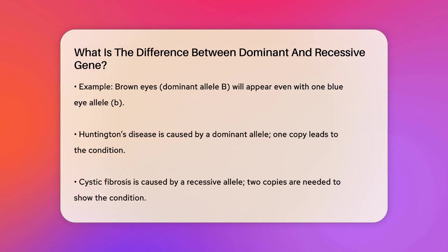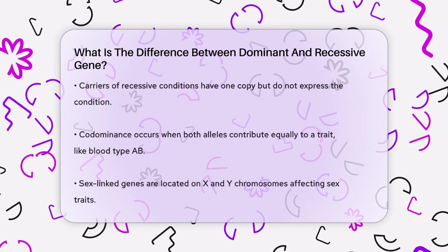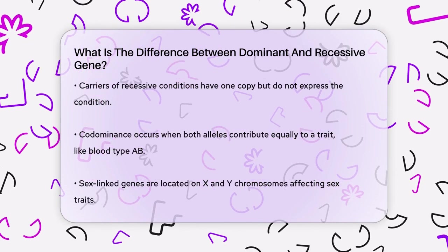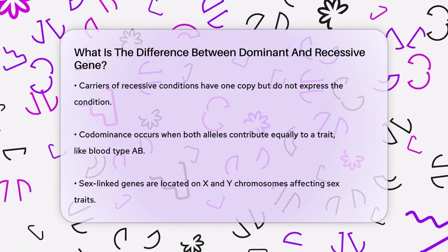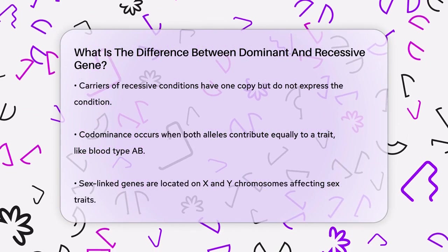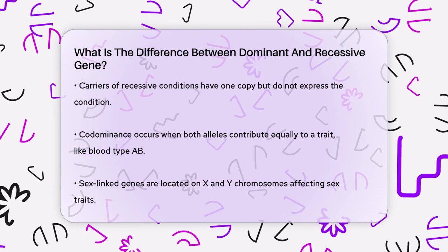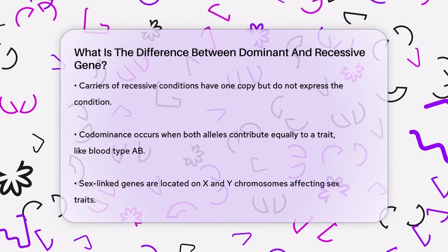Here's another example to make it clearer. Huntington's disease is caused by a dominant allele — if you inherit just one copy of this mutated gene, you'll develop the condition. However, for a recessive condition like cystic fibrosis, you need to inherit two copies of the mutated gene, one from each parent, to develop the condition. If you have just one copy, you're a carrier but won't have the condition yourself.